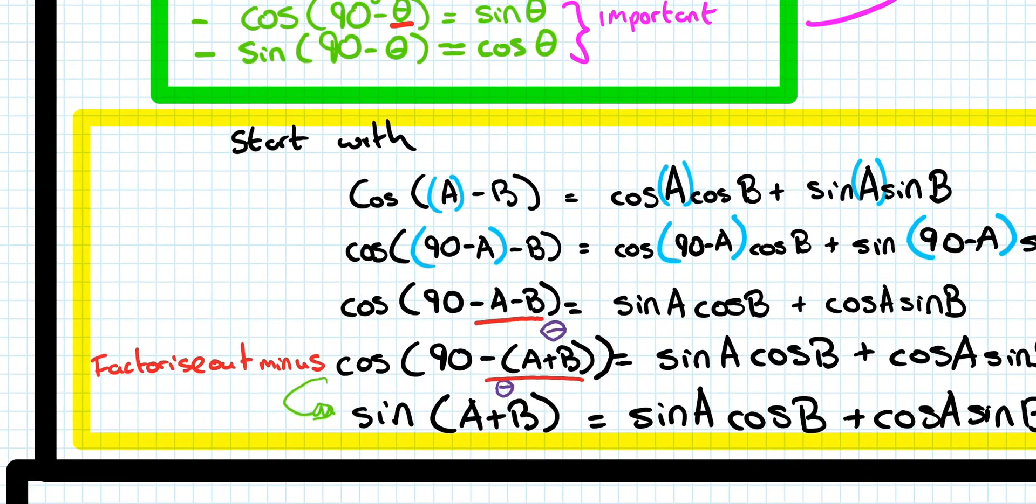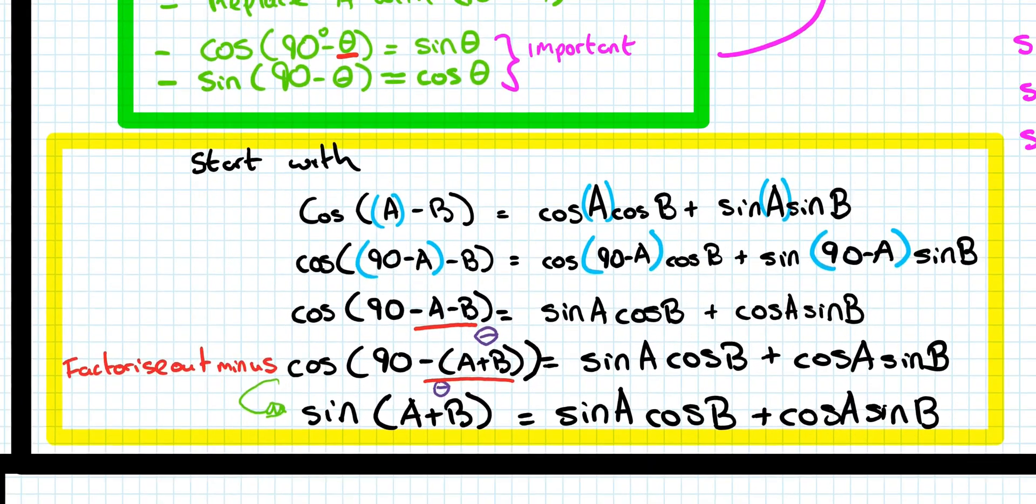And let's talk through it, so it's a nice and short one. If you want, you can pause the video and write this down line for line, or maybe wait a second, listen to the explanation, and then write it down. So we said we start off, cos of A minus B is equal to cos A cos B plus sin A sin B.